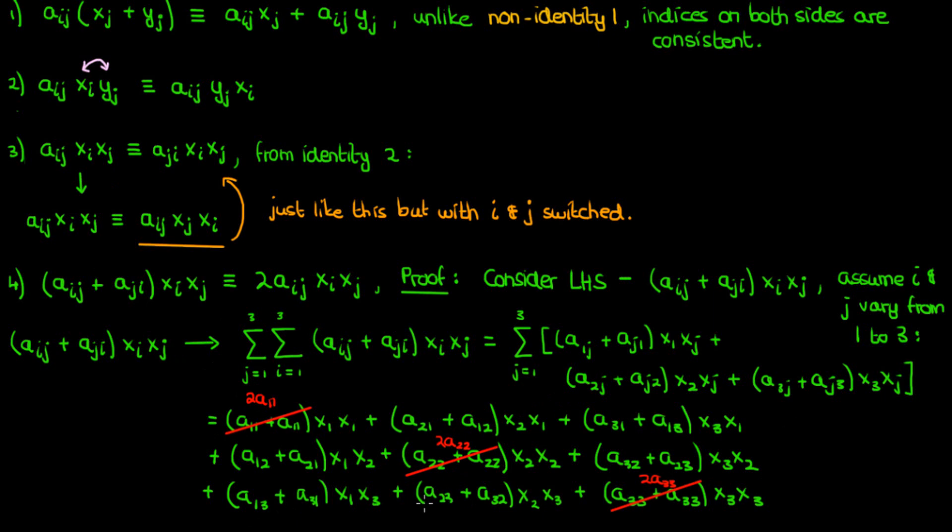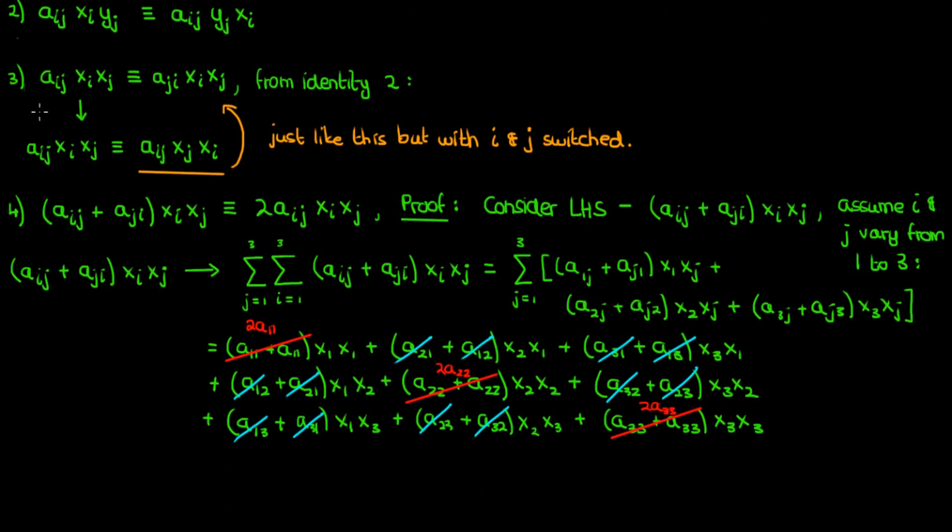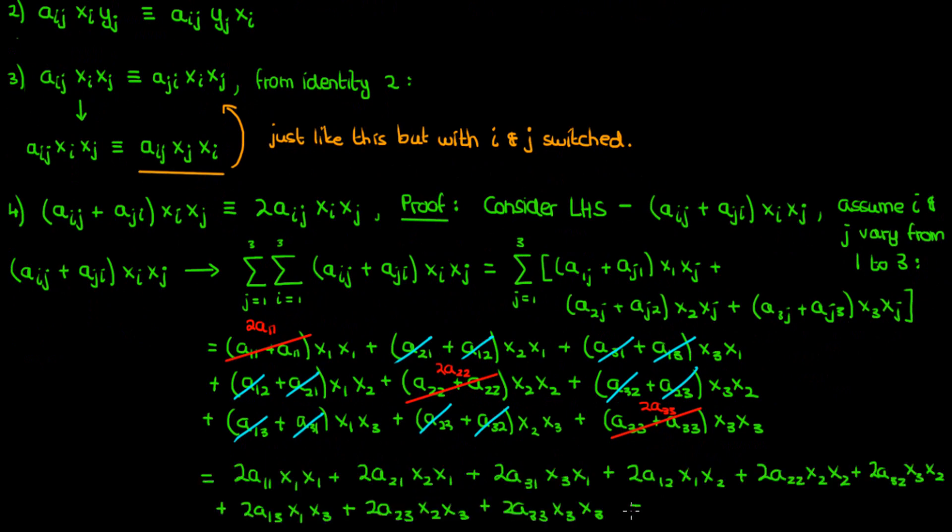Now these diagonal terms all come together quite nicely, so you have 2a11 times x1 times x1 and so on, but what about the non-diagonal terms? Well, we can combine them with other non-diagonal terms thanks to the fact that multiplication is commutative. So for instance, a23 down here combines with the other a23 up here, a32 does the same with the a32 up here, and so on, until after combining all the like terms and simplifying, this is what you end up with.